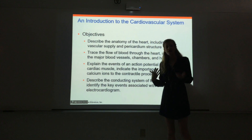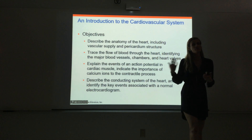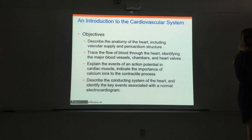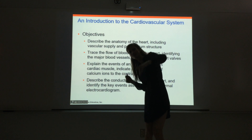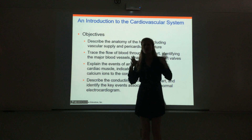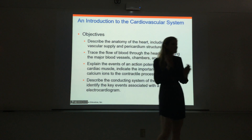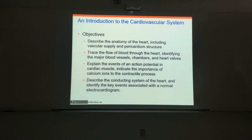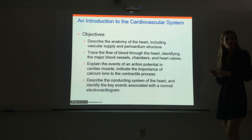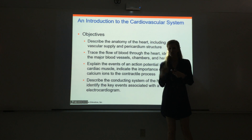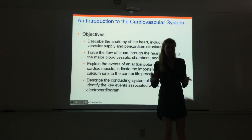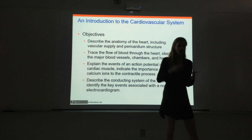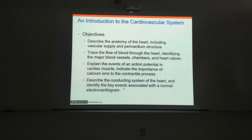By the end, you should be able to describe the anatomy of the heart including the vascular supply — the vessels that bring blood to the heart — and the pericardium, which is the membrane that surrounds the heart. You should be able to trace the flow of blood through the heart in very detailed fashion: what vessel, into what chamber, through what valve, into the next chamber, into the next vessel. Tell me whether the blood is oxygenated or deoxygenated — every detail about blood flow through the heart. You should also be able to talk about an action potential in cardiac muscle, which is a very different action potential — nothing like we saw in skeletal muscle. We'll look at transmembrane potential and how ions flow and change the charge — very different in cardiac muscle.